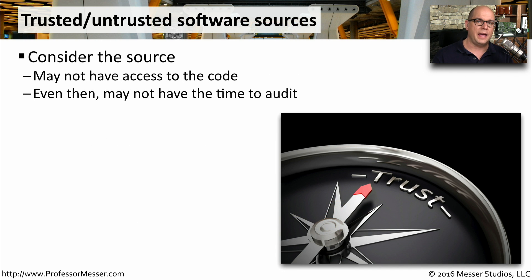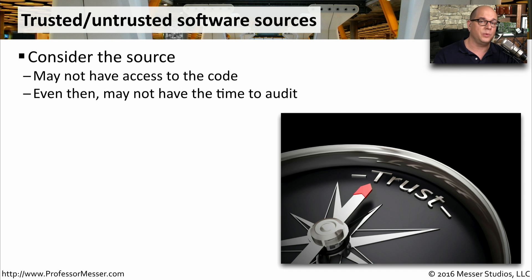We should always be concerned with the applications we're installing on our computer, because these applications have access to our personal information and to the operating system. In a perfect world, we would read all the source code for an application and audit it to make sure it's trustworthy, but we don't always have access to the source code, and we don't have enough time to audit every bit of source code we might be installing. Because of that, we generally categorize the software we're installing as coming from a trusted source or an untrusted source.